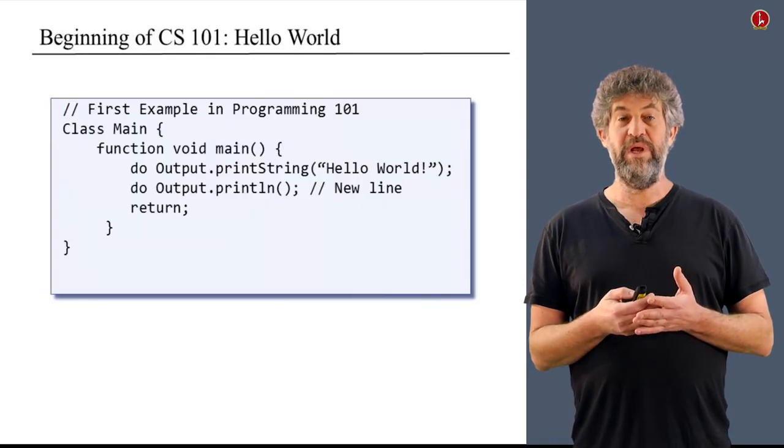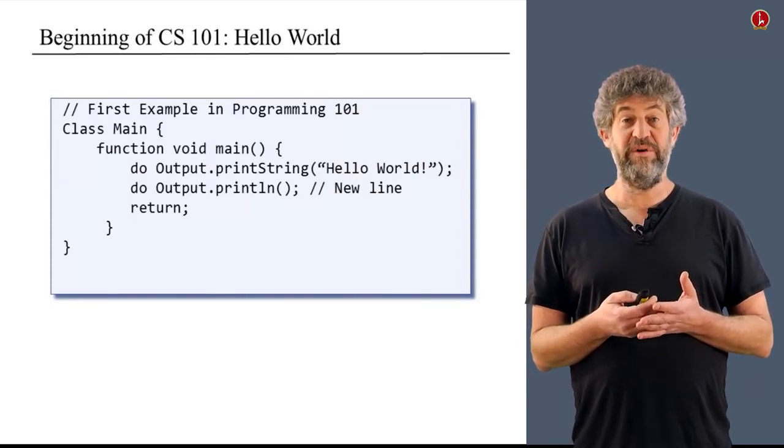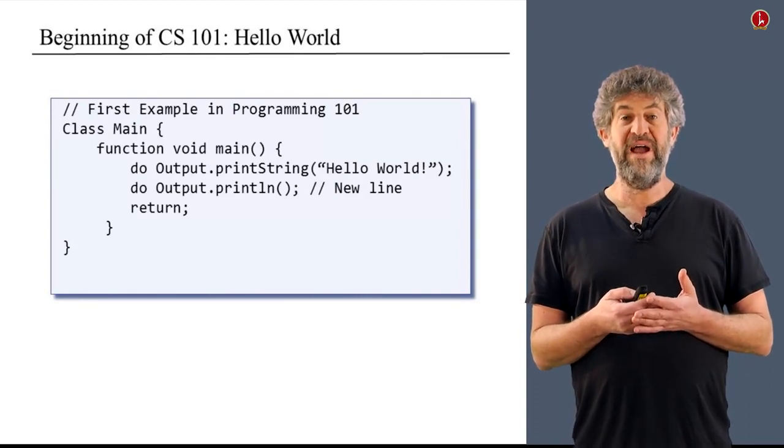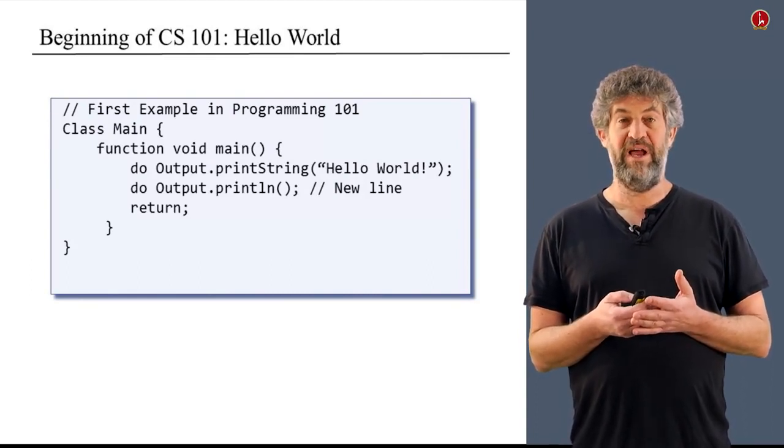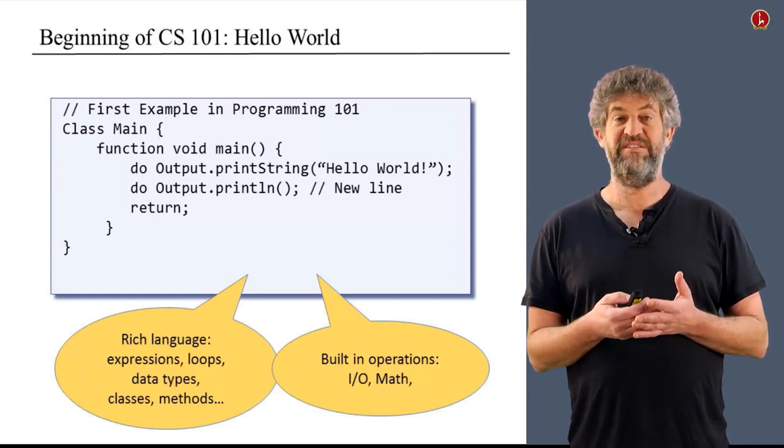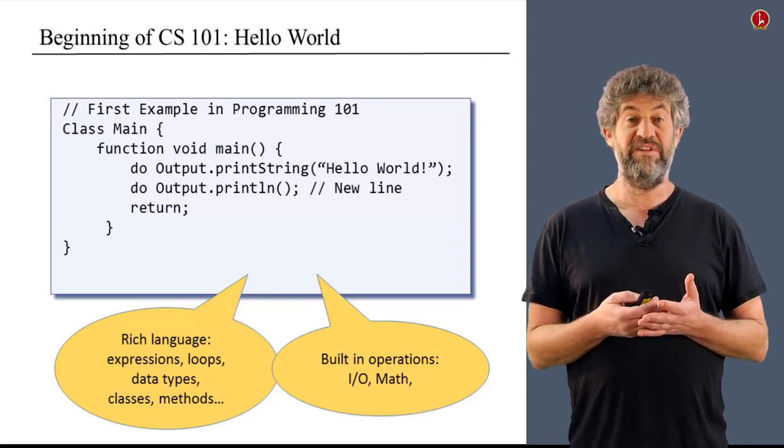Most programmers really want to work with a high level language, something like this example that is very typical of what you see in an introduction to programming course. So the kind of things that you have in such a high level language includes a rich language, loops, data types, methods, abstraction, many things that do not appear in the assembly language that is the end of this course.